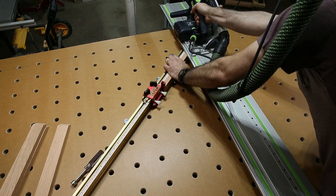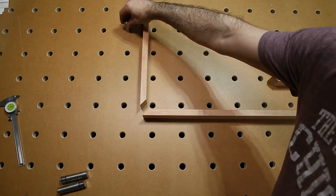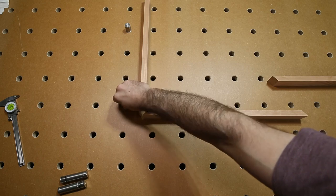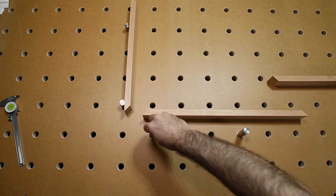So if you've never used an MFT top before, the whole point here is that these dog holes are drilled in a very precise grid. So they're all very square to each other.